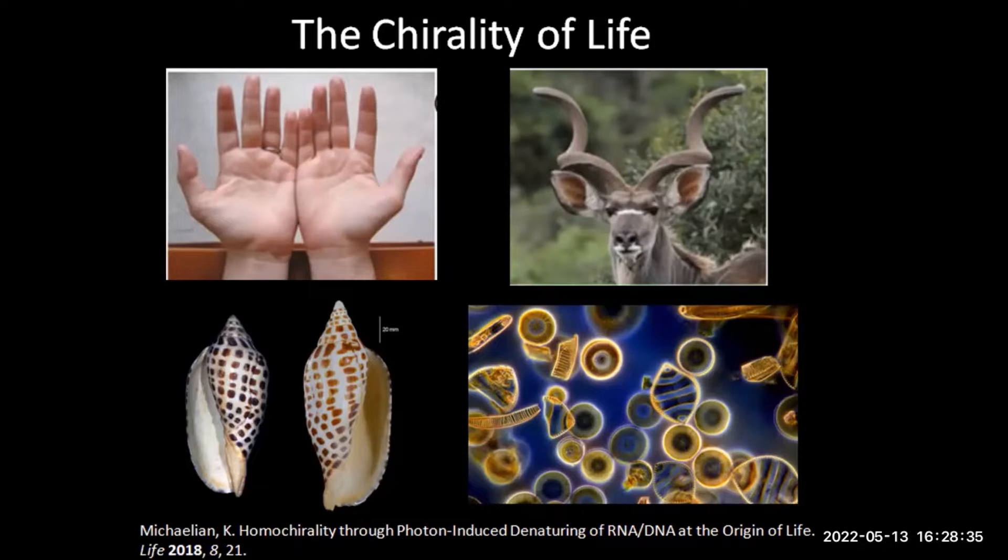Today we're going to talk about the chirality of life. Chirality is a geometrical property that we have in three dimensions. An example is our left and right hands. They're distinct. We cannot overlap them and get them to fall into place.